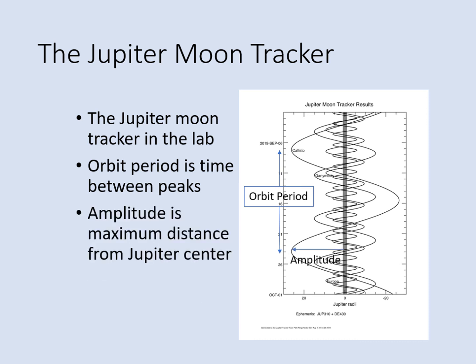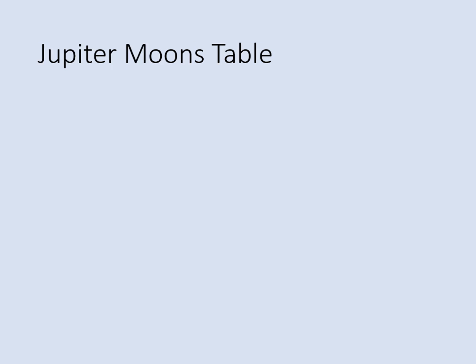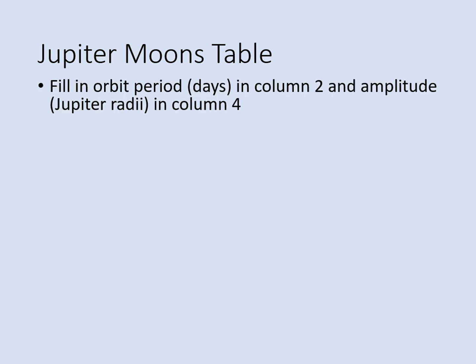Next, find the amplitude of the orbit. This is really the distance from the center of Jupiter to the most extreme point in the moon's orbit. You need to measure it in units of Jupiter radii, which are the units on the scale at the bottom. You can use a ruler or a straight piece of paper to line up the edge of a moon's orbit with the scale to estimate how many Jupiter radii out the orbit is. Repeat both of these measurements for all four moons, and record your measurements in the Jupiter Moons table — the orbit period goes in column two and the amplitude goes into column four.